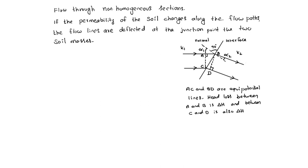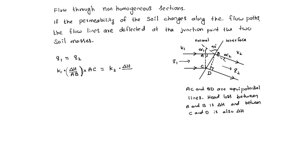From the continuity equation, Q1 equals Q2. Q1 is K1 into hydraulic gradient — that is, head loss delta H divided by length of flow AB — into area AC. This must be equal to K2 into head loss delta H divided by length of flow CD, into BD.